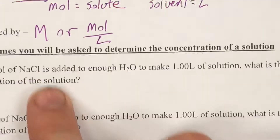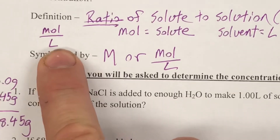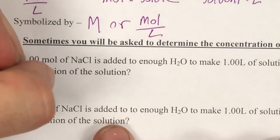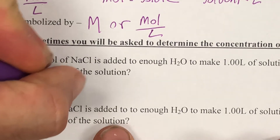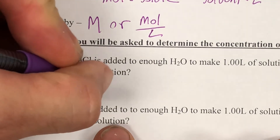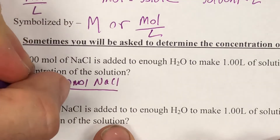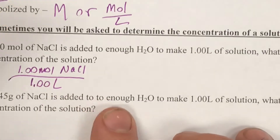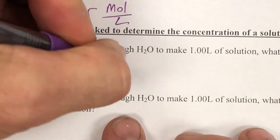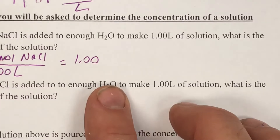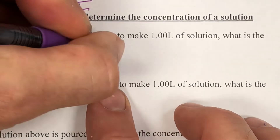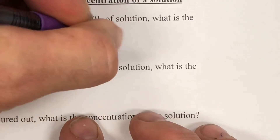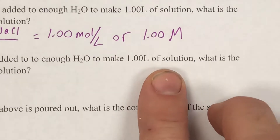On paper it's really simple. I have 1.00 moles of NaCl over one liter of solution — one divided by one is one. That equals 1.00. I can write this two ways: moles per liter, or 1.00 big M. Those say the same thing.